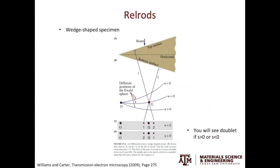So far, we've only looked at flat specimens, but in real life a lot of specimens have a wedge shape. In this case, we'll have two non-parallel surfaces, and each will give rise to a relrod. In the example shown here, the top surface will give you a relrod like that, and the bottom surface will give you a relrod like this.